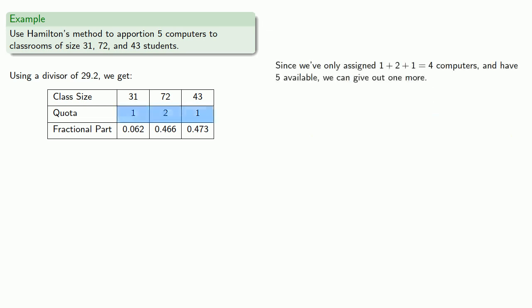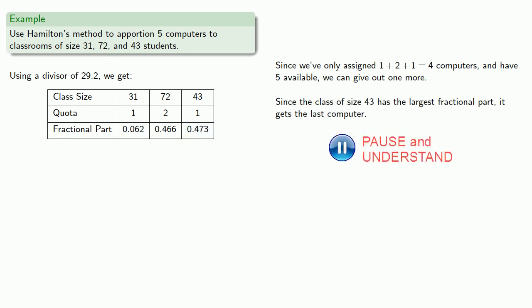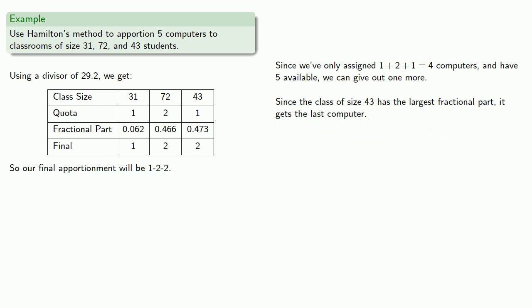Now at this point, we've only assigned one plus two plus one, four computers, and since we have five available, we can give out one more. We look at our fractional parts, and since the class of size 43 has the largest fractional part, it gets the last computer. So our final apportionment will be one, two, two.